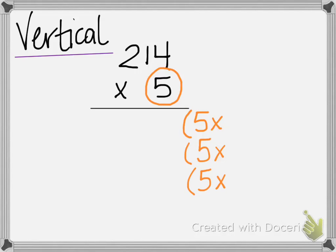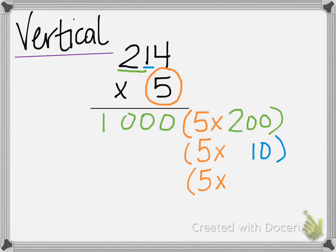We are then going to expand the three-digit number. Looking at the hundreds place, the two is equal to 200, so five times 200 gives us 1,000. Next, looking at the tens, we have a 10 in the tens place, so five times 10 is 50. And in the ones place is 4 — five times 4 is 20.